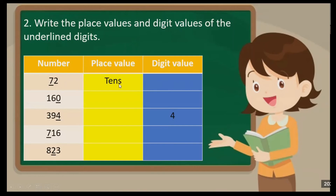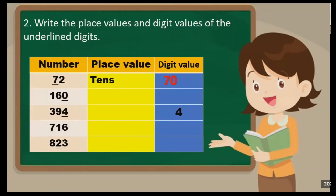The place value of the digit 7 in that number is tens, and its digit value is 70. The place value of the digit 0 is ones, and its digit value is 0 — because it is zero. In 394, the place value of the digit 4 is ones, and its digit value is 4.